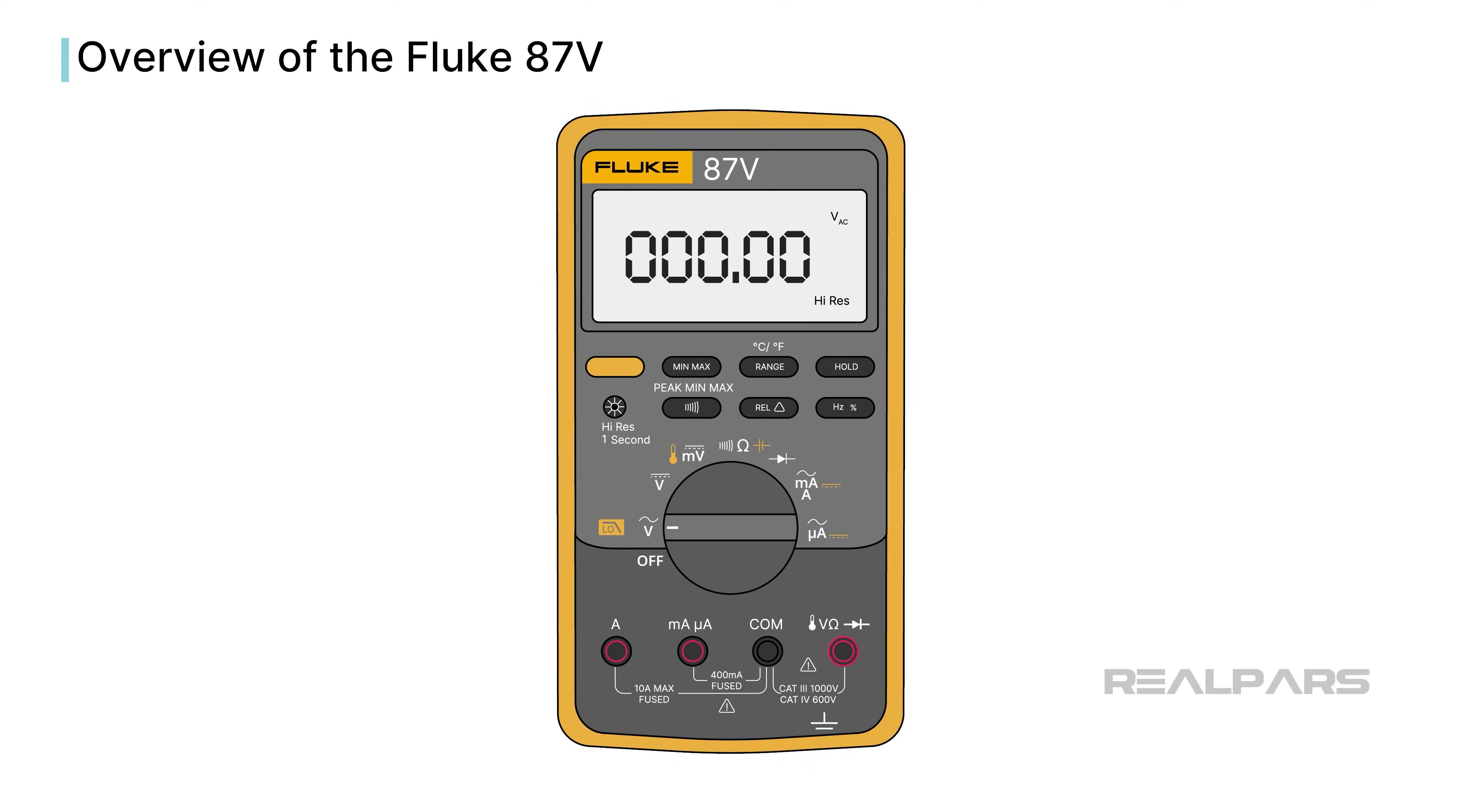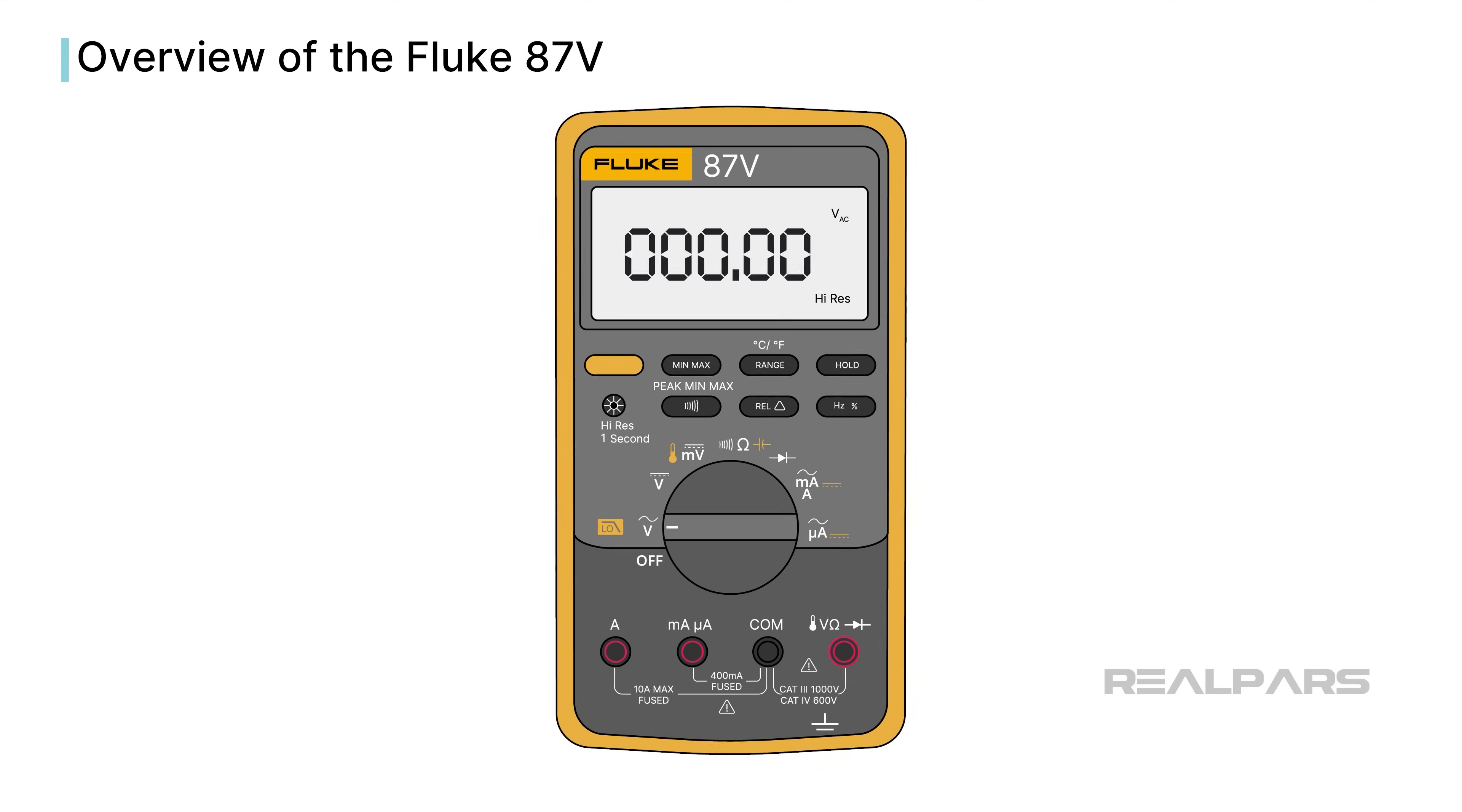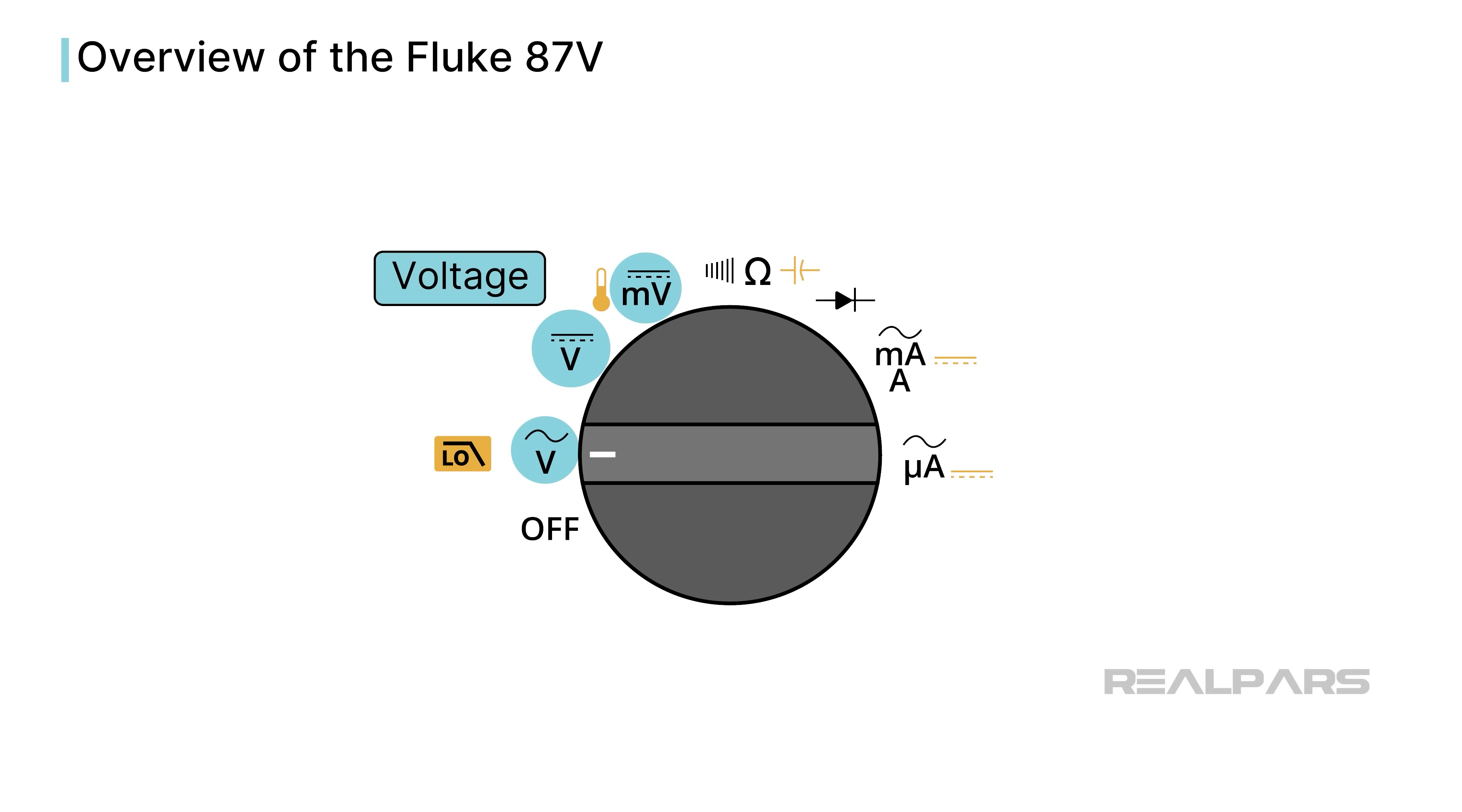Okay, let's start with some basics. DMMs measure voltage, current, and resistance.